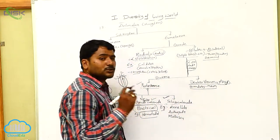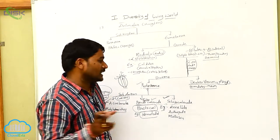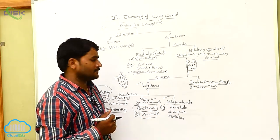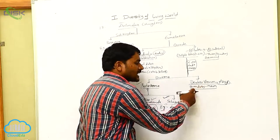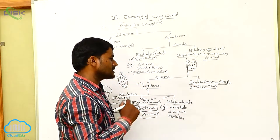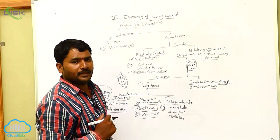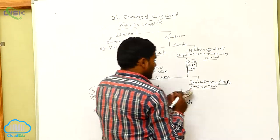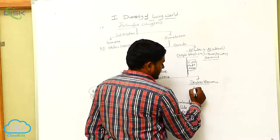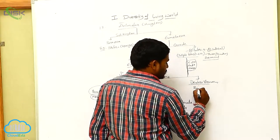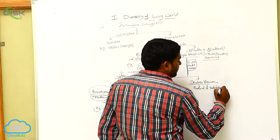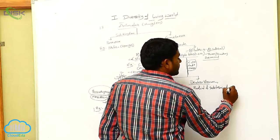In Deuterostomia, the secondary opening develops into mouth and the primary opening develops into anus. So in deuterostomia, secondary opening is mouth and primary opening is anus. Deuterostomia exhibits radial and indeterminate cleavage.